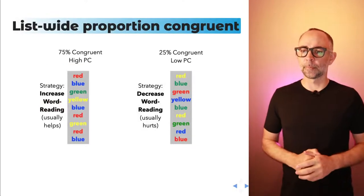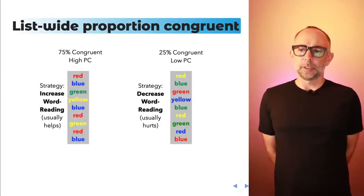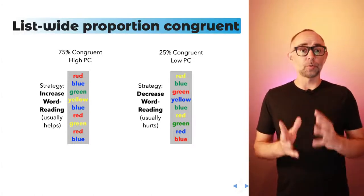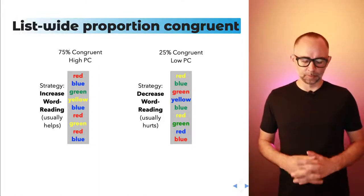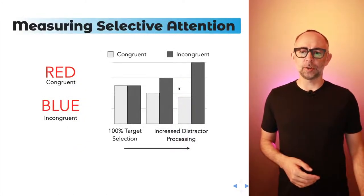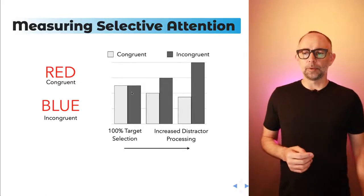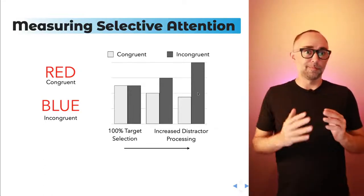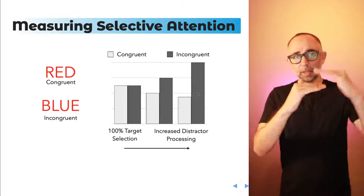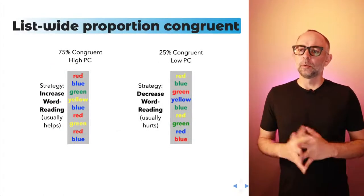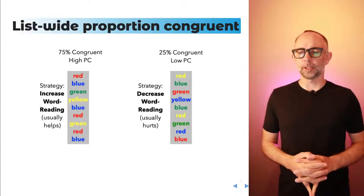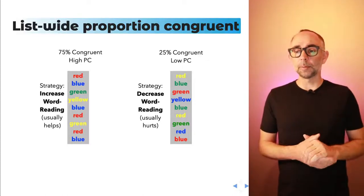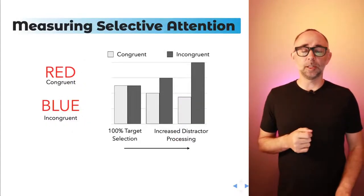Let's talk about some experiments investigating whether people can control how much word information they're attending to. Can you change the size of your Stroop effect? For example, if you really focus on ignoring the words, do you get a small Stroop effect? And if you focus on the words or fail at ignoring them, can you make the effect bigger? We're talking about the List-Wide Proportion Congruent Manipulation — a demonstration showing one way to make the Stroop effect smaller and bigger, reflecting a change in selective attention.